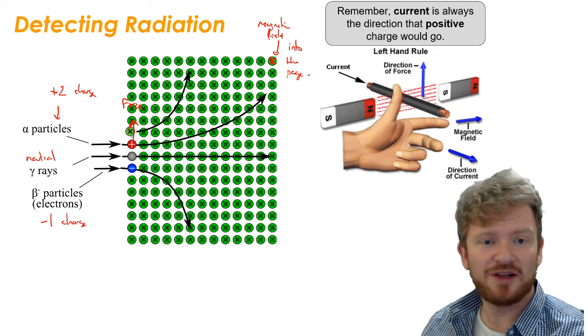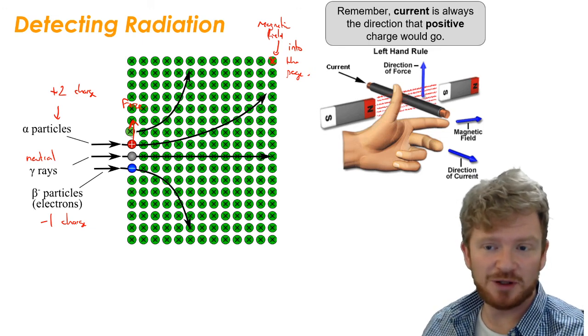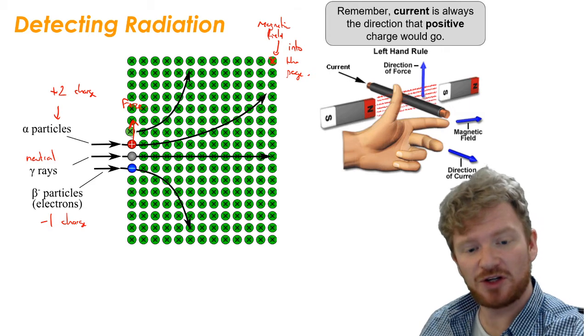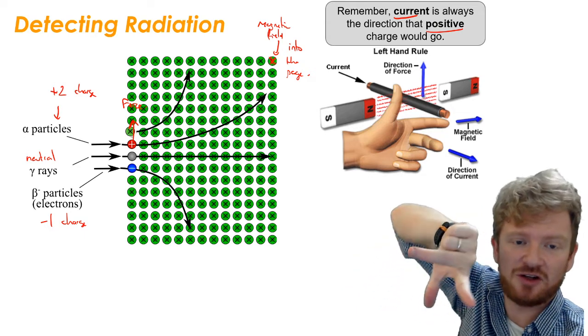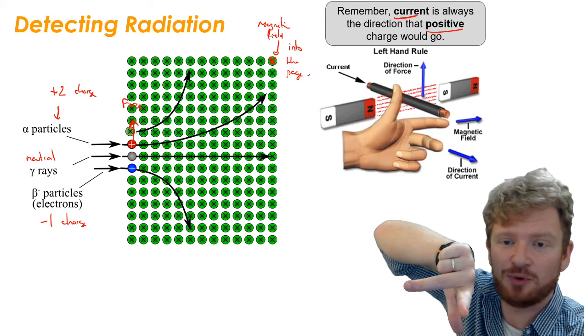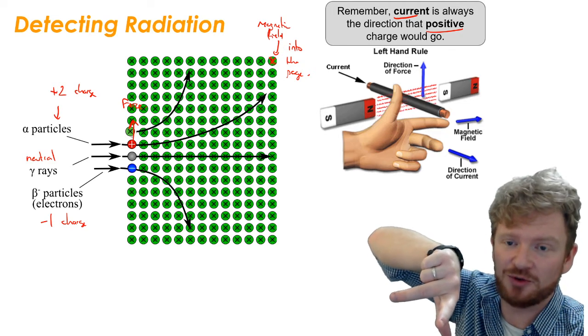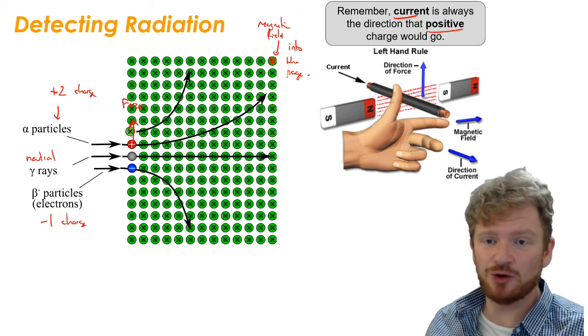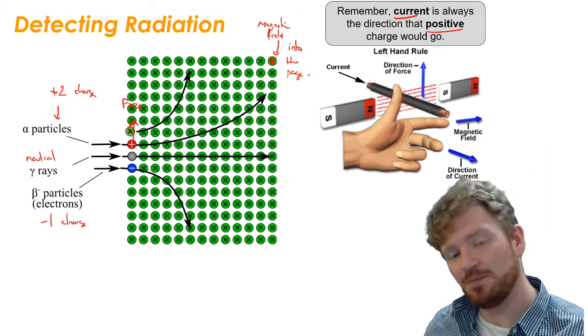For the gamma rays, well, they're neutral, so they don't have a charge, so they don't get deflected at all. And then for the beta minus particles, the electrons, those are electrons. If current is the direction that positive charge would go, what we have to do is turn our hand around so that our current finger actually points in the opposite direction, because current always has to be in the direction that positive charge would go if our electrons are going in the opposite direction. So a really easy way of telling which type of radiation you've got is to stick it through a magnet. Alpha will bend one way, and beta will bend in the opposite way.